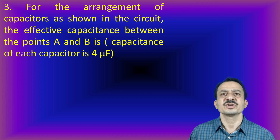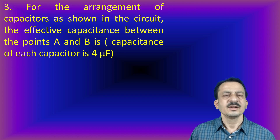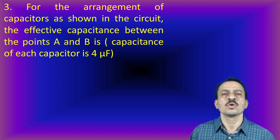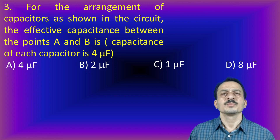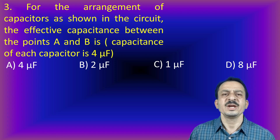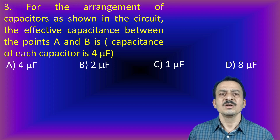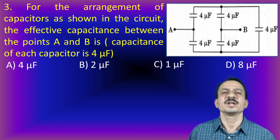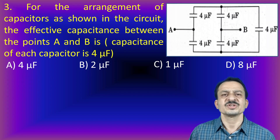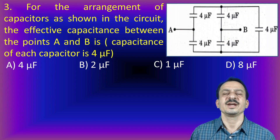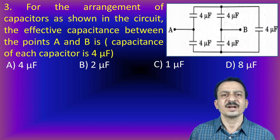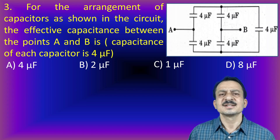Next problem: for the arrangement of capacitors as shown in the circuit, the effective capacitance between points A and B is to be found. The capacitance of each capacitor is 4 microfarad. Options: A, 4 microfarad; B, 2 microfarad; C, 1 microfarad; and D, 8 microfarad. There are 5 capacitors arranged between terminals A and B. Let me rewrite this diagram.